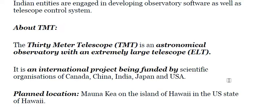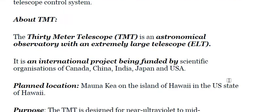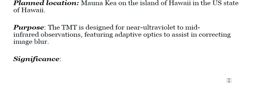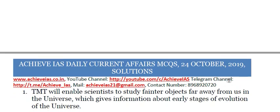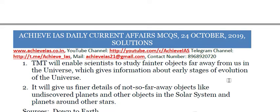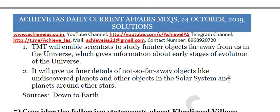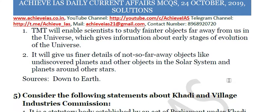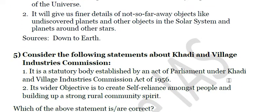The TMT is an international project jointly funded by scientific organizations of Canada, China, India, Japan, and the USA. The planned location is Maunakea on the island of Hawaii in the US state of Hawaii. It is designed for near ultraviolet to mid-infrared observations, featuring adaptive optics to correct image blur. Its significance is that the TMT will enable scientists to study fainter objects far away in the universe, providing information about the early stages of the universe's evolution, as well as finer details of undiscovered planets and other objects in the solar system.